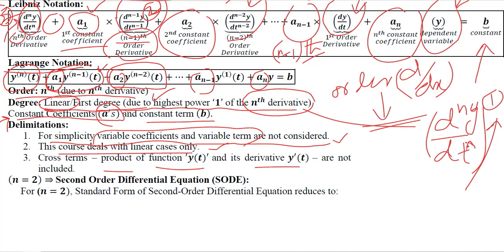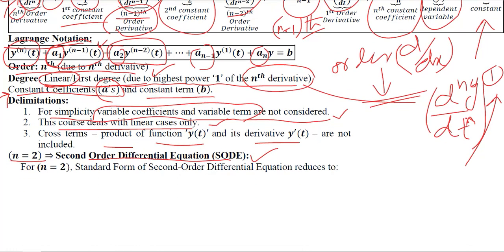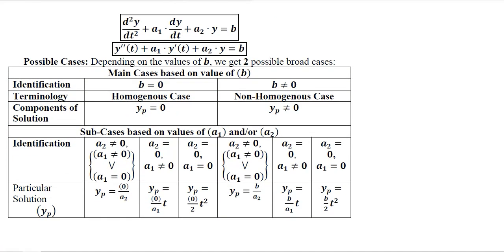Assuming n equals 2, that is second order differential equations, the standard form is reduced to: the highest order derivative (2nd order), followed by the first coefficient, then the first order derivative with the second coefficient, and then the function itself. We can also write this in Lagrange form: the second order derivative, the first order derivative, the original function, with coefficients a1 and a2.